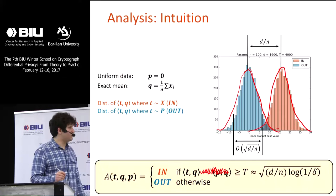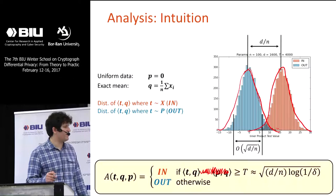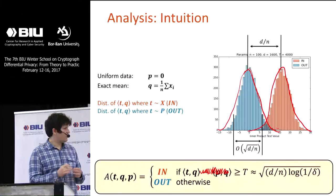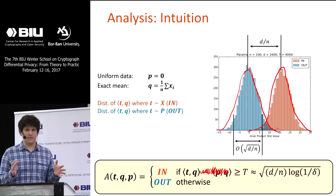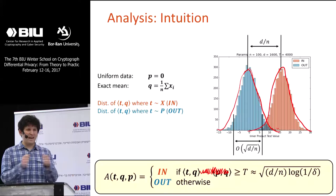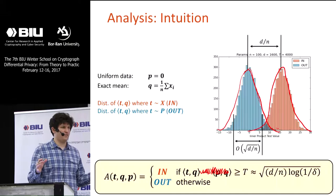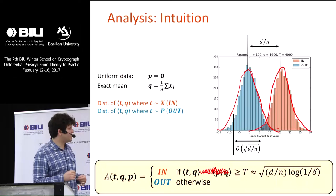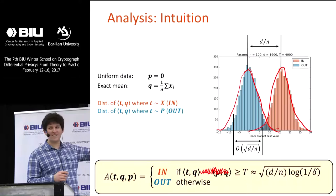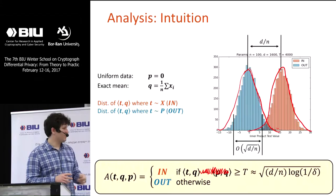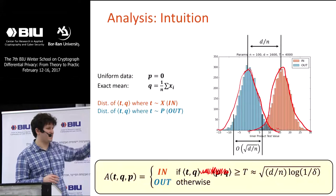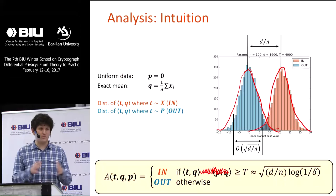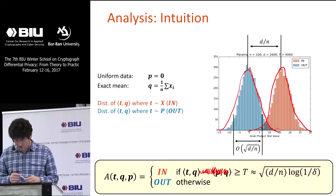As d gets large relative to n, these Gaussians get well separated. The standard deviation of the Gaussians is about sqrt(d/n). When d/n is significantly bigger than one, the gap between the two distributions is significantly bigger than the standard deviation — meaning a random sample from blue or orange will give a pretty good chance of distinguishing them. This is the whole game in all these attacks: we try to impose this picture where in the out-case we get one Gaussian-like distribution and in the in-case we get another.